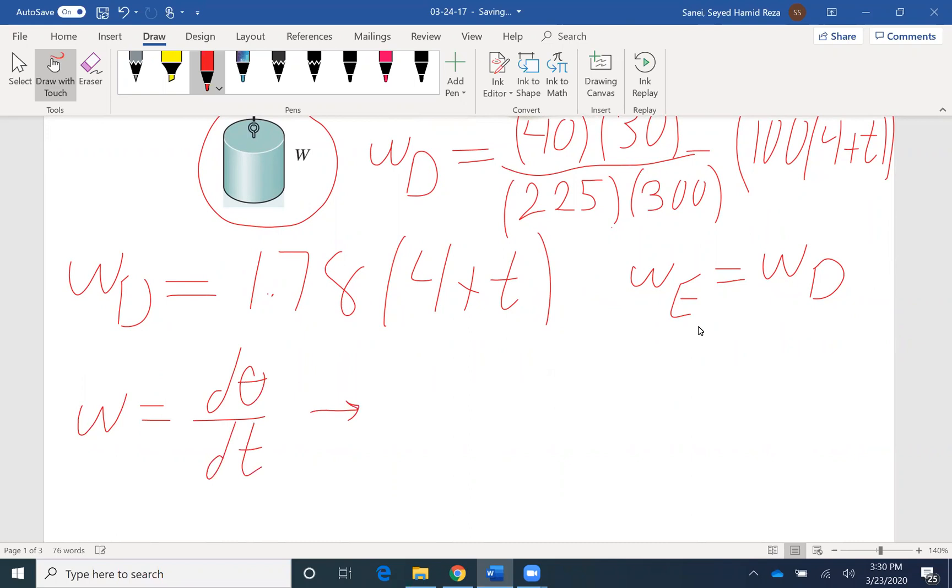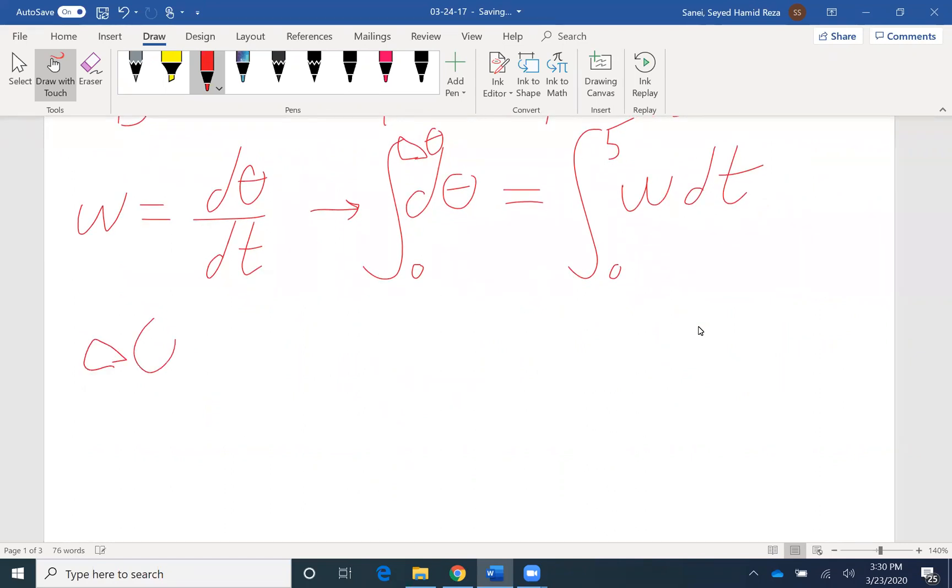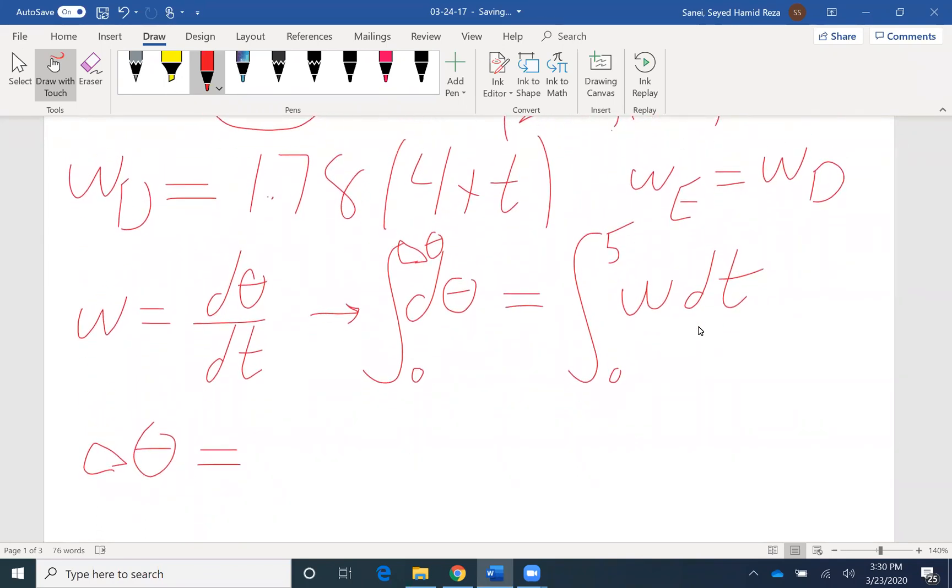Because omega D is not constant, we need to write the derivative form and take an integration from 0 to delta theta. Omega dt from 0 to 5 seconds. D theta would be simply delta theta. And if we take a derivative of omega dt, omega dt is 1.78, so we can keep the coefficient, 4 would be 4T, and T would be T squared over 2, from 0 to 5. Plugging the value to find delta theta would be 57.85 radian.